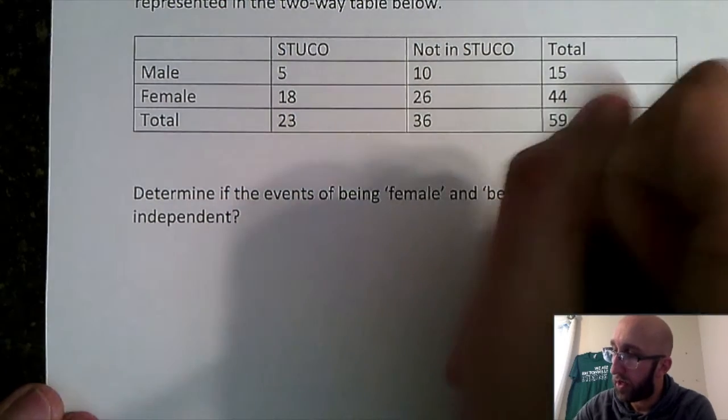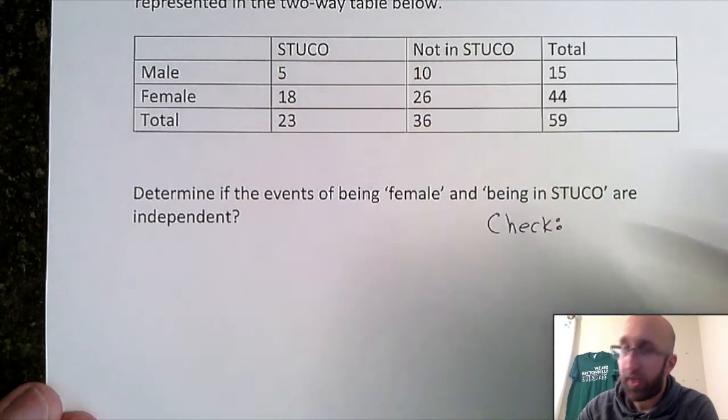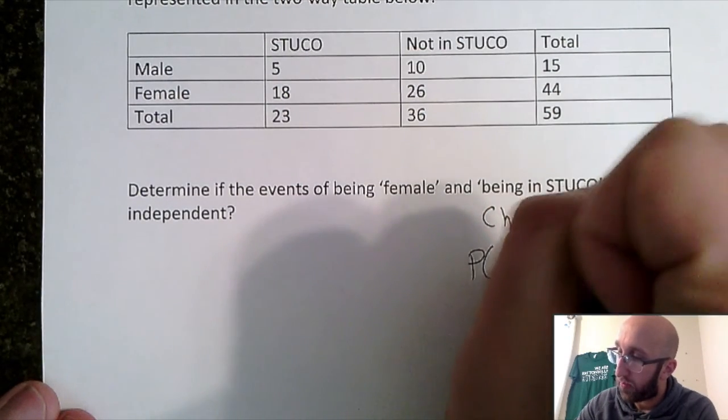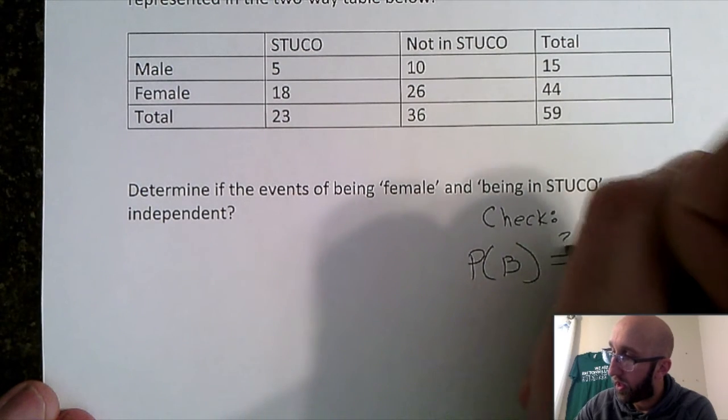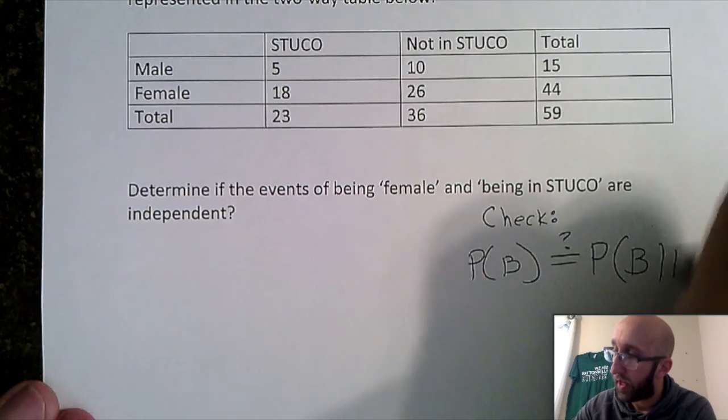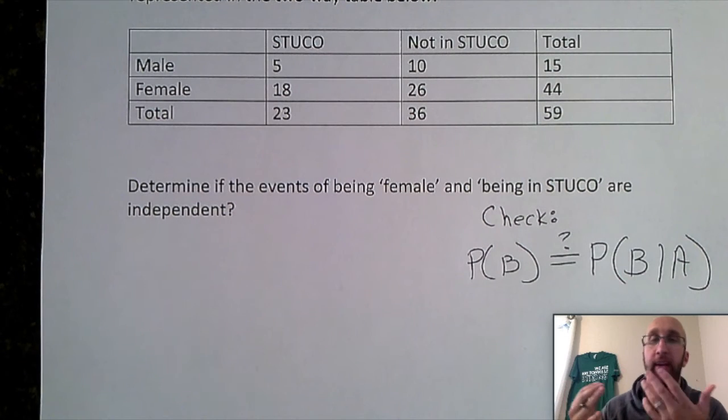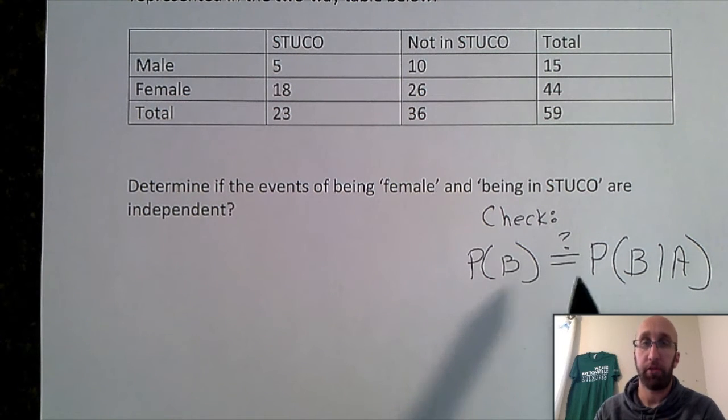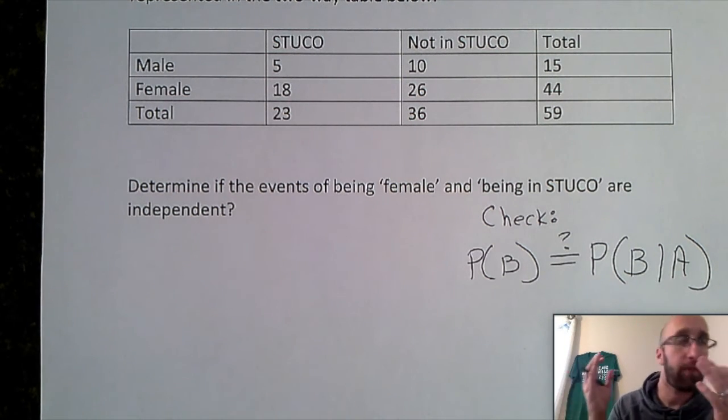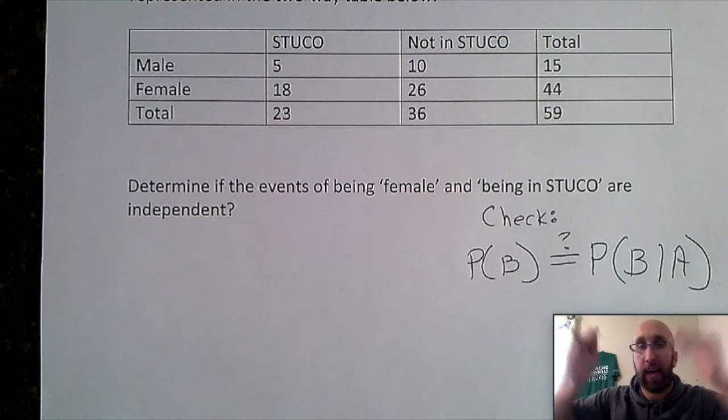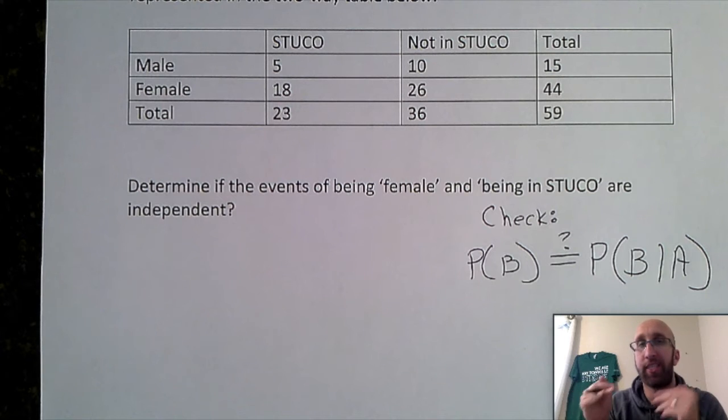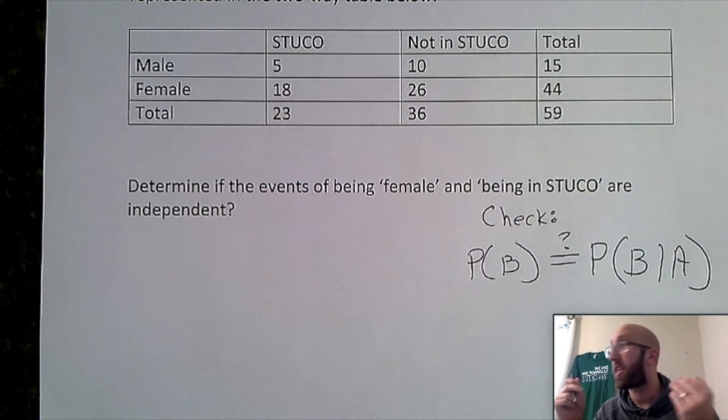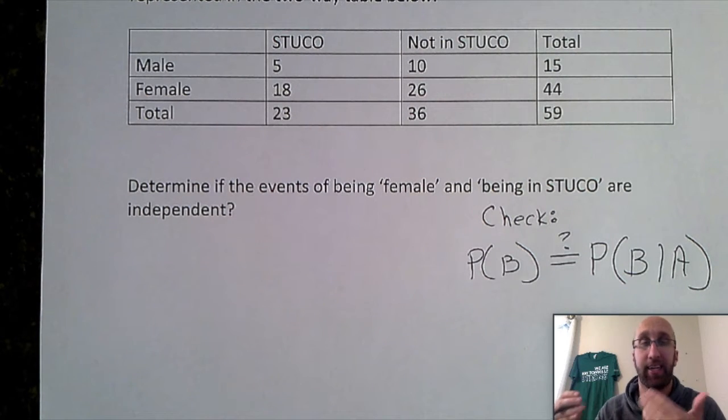So what we need to do is we need to check: is the probability of B equal to the probability of B given A? So if you have two events A and B and you want to mathematically show they're independent, you need to check is the probability of B equal to the probability of B given A. So you need to plug in one event for your B, one event for your A, calculate the probabilities, and see are these the same. If they're the same we are independent. If they are not equal to each other then we are not independent, aka dependent.